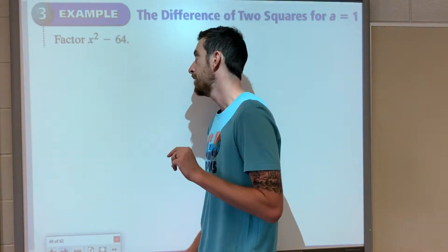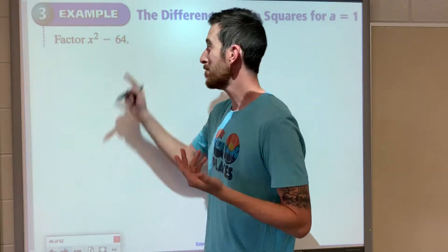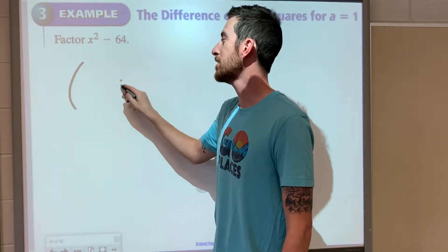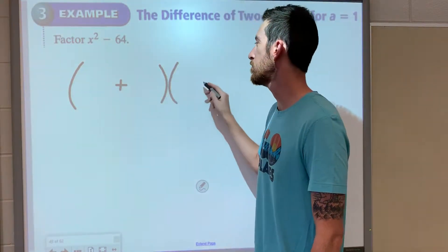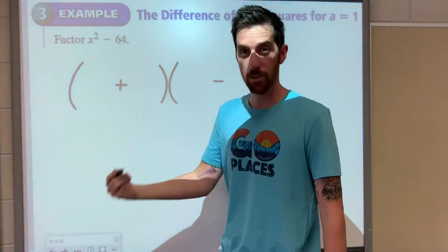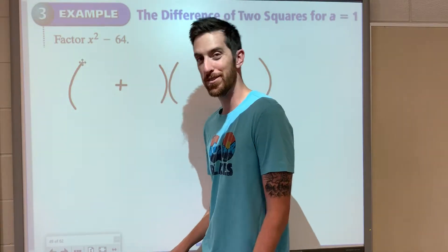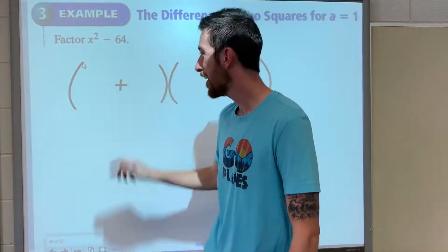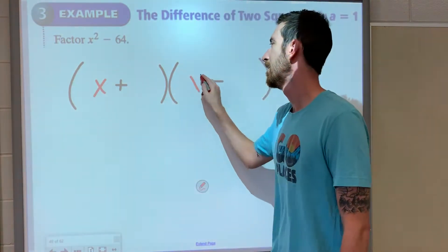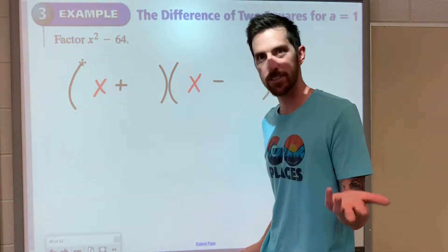Remember, difference of squares is when it's the exact same thing in parentheses, but one has a plus and one has a minus. So all we got to do is square root each one. What's the square root of x squared? x. What's the square root of 64?